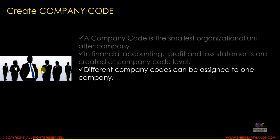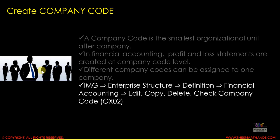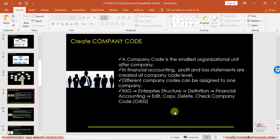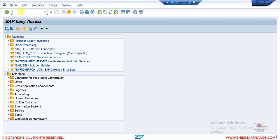Different company codes can be assigned to one company. This is the menu path you can use to go into this customizing object, or you can also use transaction code OX02 to directly jump to the customizing screen. Let me show you this in the SAP system.